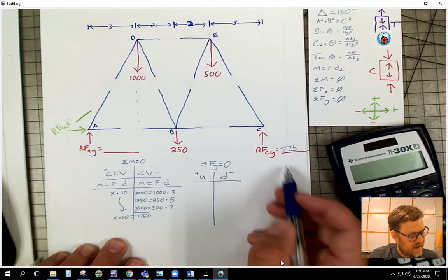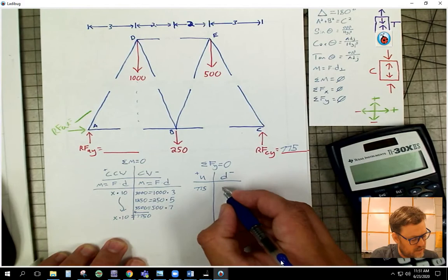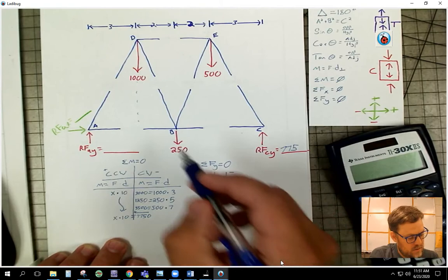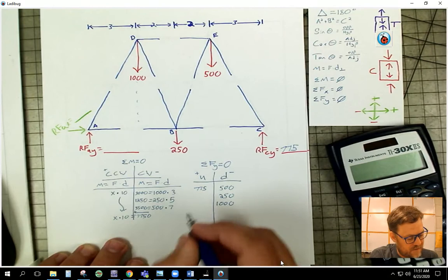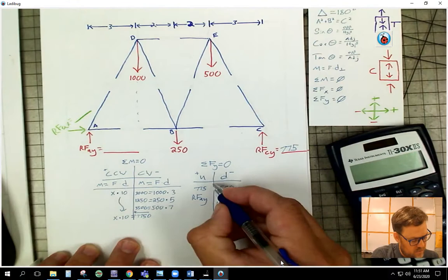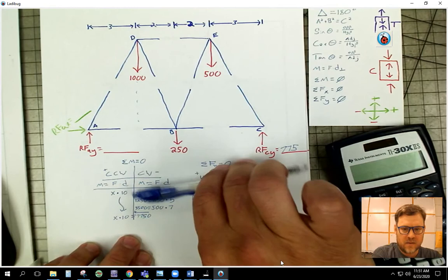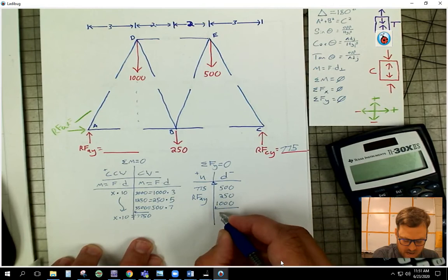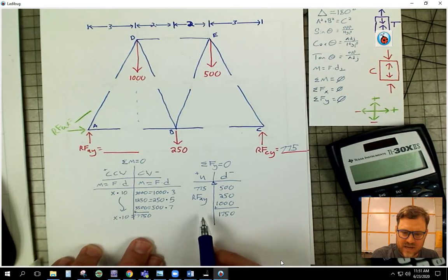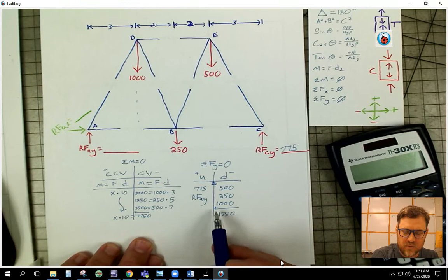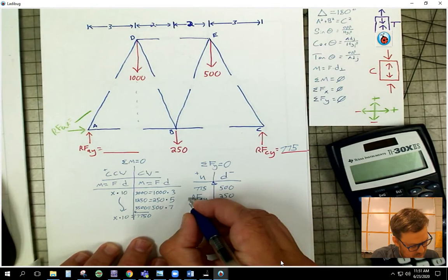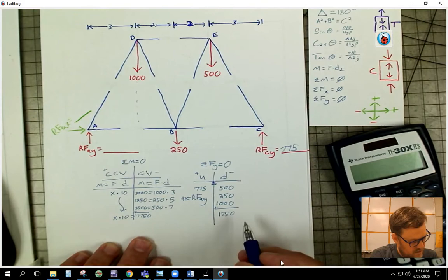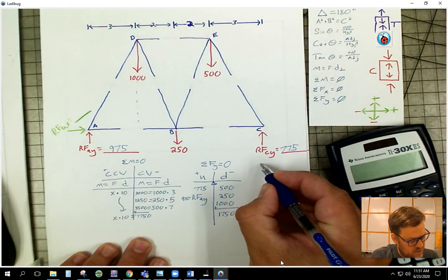I'm going to start here. 775 is going up. Come over 500, it's going down. Next 250 going down. Next 1000, it's going down. Come over and I have RFAY, it's going up. So I think about this as a teeter totter. This thing has to balance out with a positive and a negative value. So if I sum all these forces on this side, I get 1750. I know that this side has to equal 1750. So 775 plus RFAY has to equal this. If I just take my 1750 minus 775, I'm going to get 975. So now I know this one's 975.